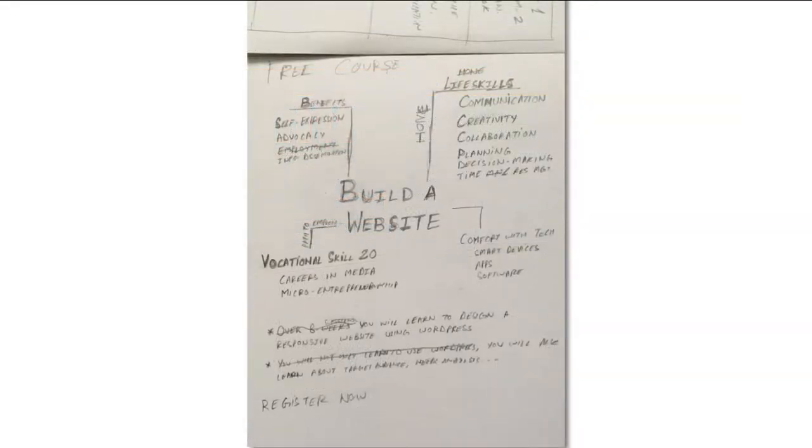Here is one last example. So for this course, I had also developed a flyer, and for the flyer also I had created a storyboard. So in the storyboard, essentially I was trying to visualize what is the key message we want to convey in the flyer. And what we were saying is that in the process of building a website, the benefits you derive are that you improve your self-expression, you learn certain life skills, and digital media literacy is a vocational skill 2.0. And in developing the website, you will develop comfort with technology. And once I had storyboarded this, then the flyer looked like this.